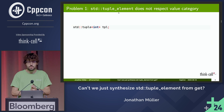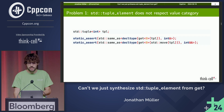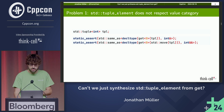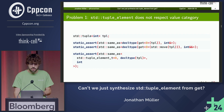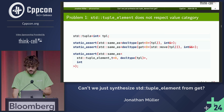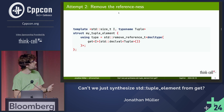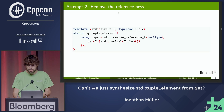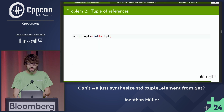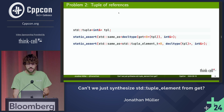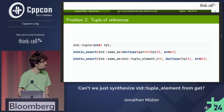It immediately breaks because tuple_element does not represent value category. So if you have a tuple of int, then get of an L-value gives an L-value reference and get of an R-value reference gives an R-value reference. So far so good, but tuple_element is just int, because that's the type in the tuple. No problem - we can just remove the reference, and now it's int for a tuple of ints. But of course a tuple itself can contain a reference, and then get gives you the reference, but we strip it and then tuple_element would not be int-ref, which is what we want.